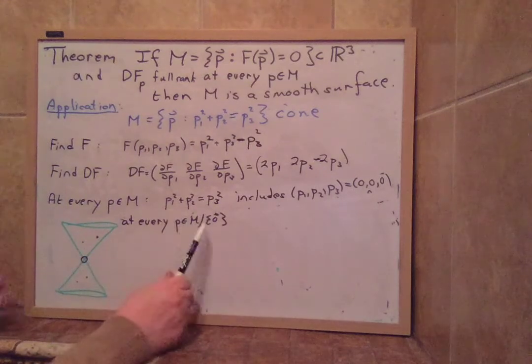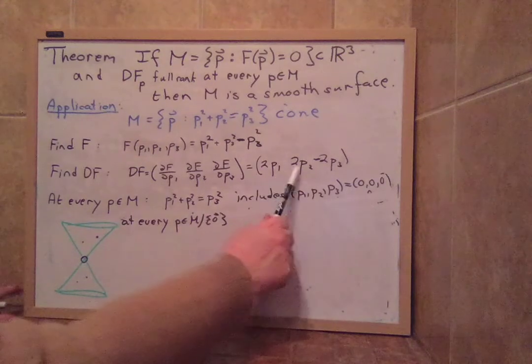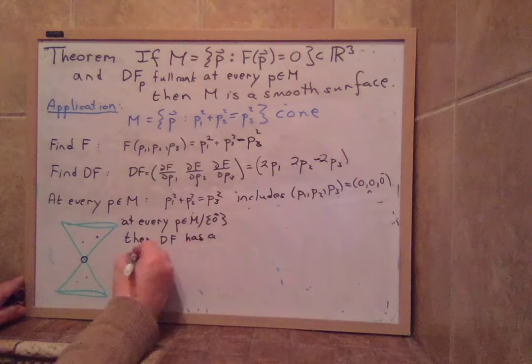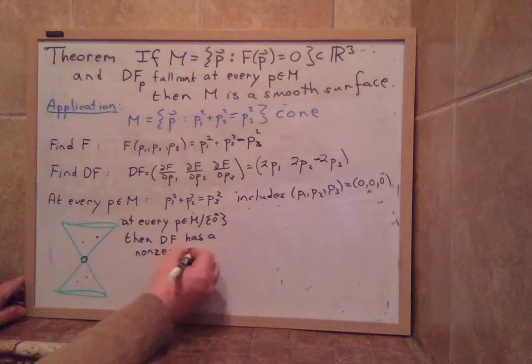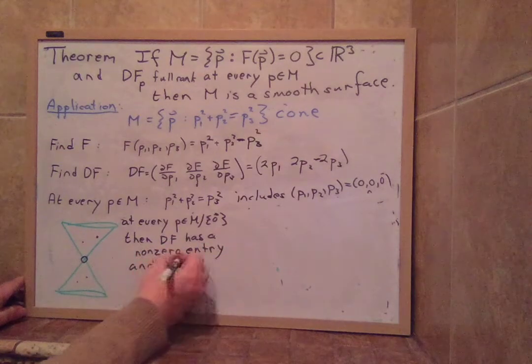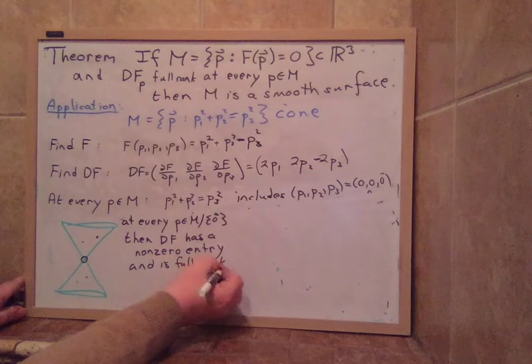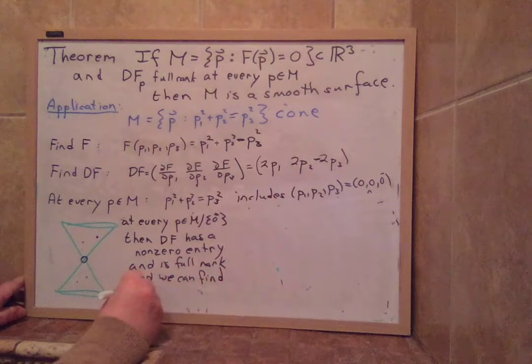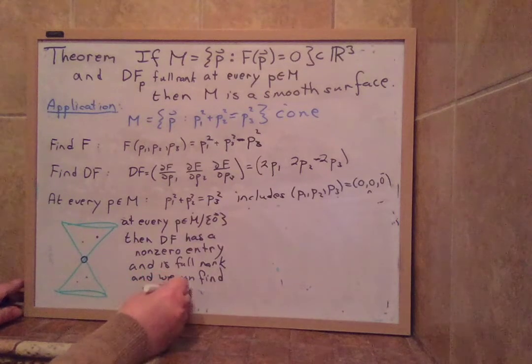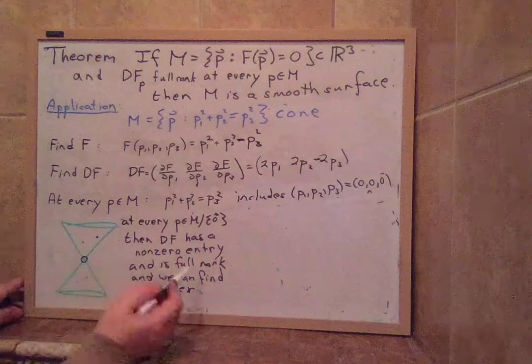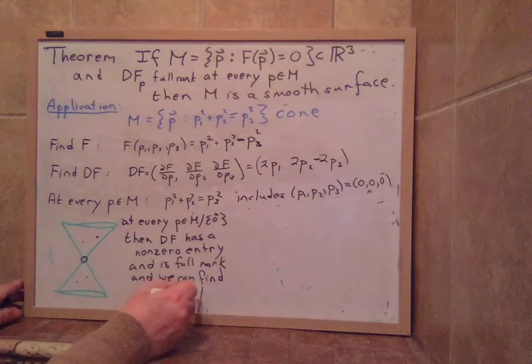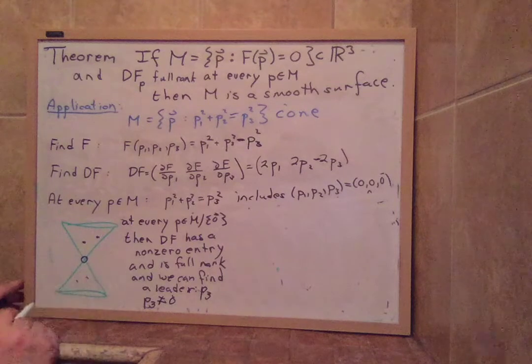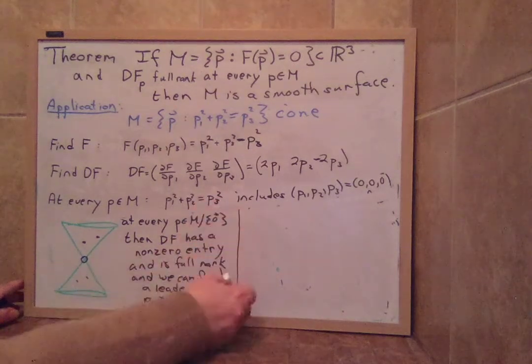if I look at points over here or down here, then I have no trouble. If p is not all 3, 0, then df has full rank. Then df has full rank. It has a non-zero entry. And we can find a leader. In fact, on this cone, the leader will be p3. In fact, the leader is p3 because p3 is not equal to 0. At any of these points, p3 is not 0. So that's fine. You solve for p3 and you get a nice chart.